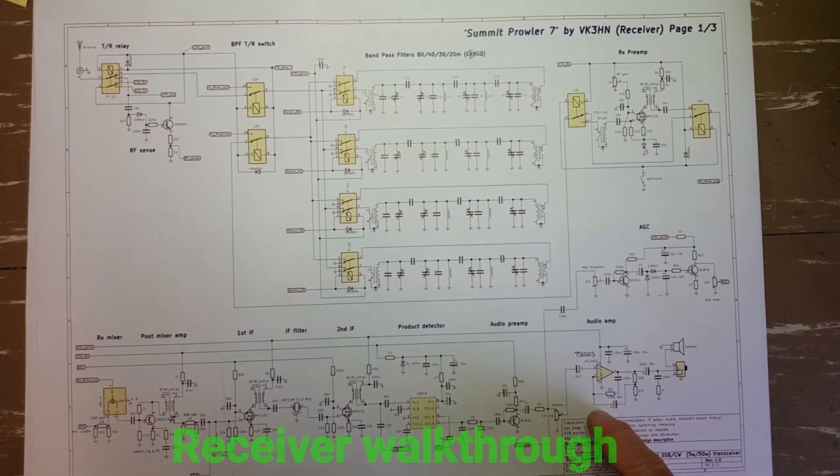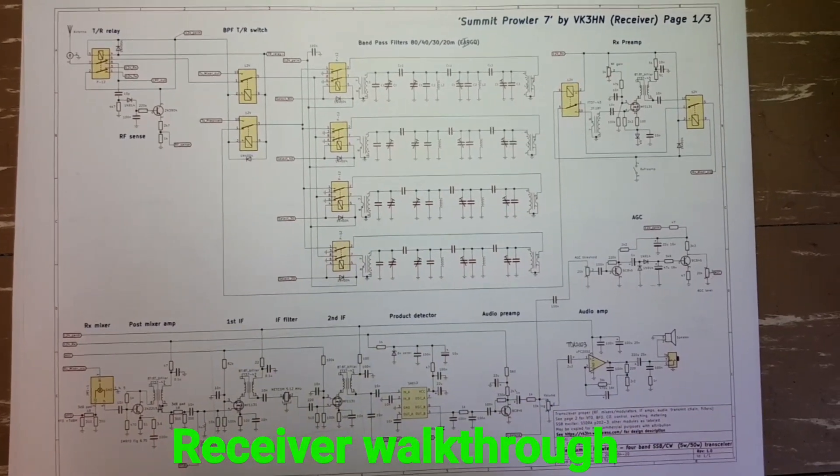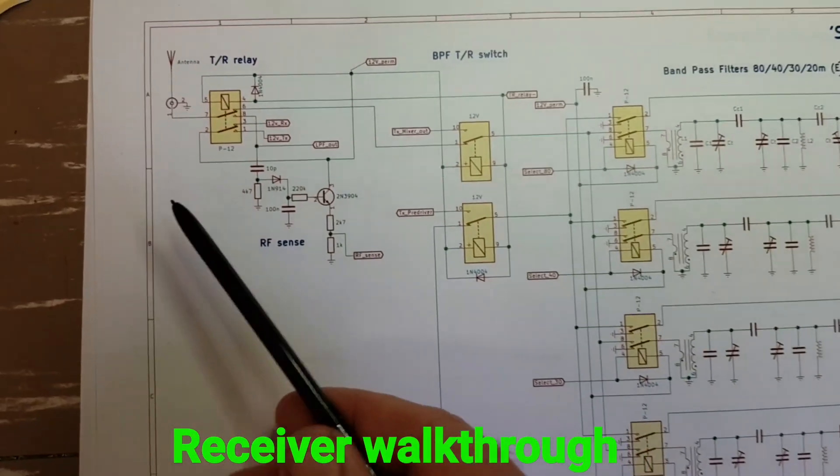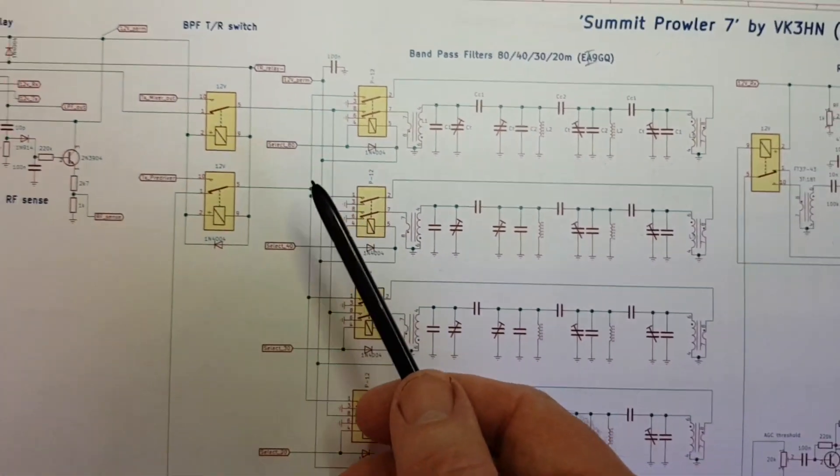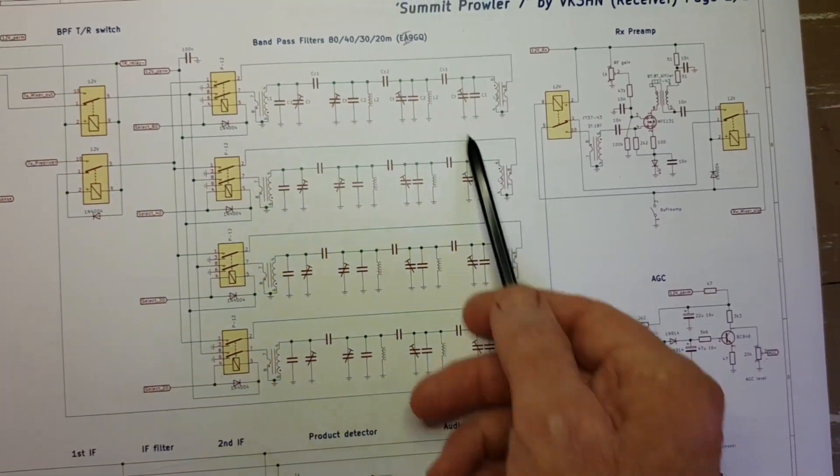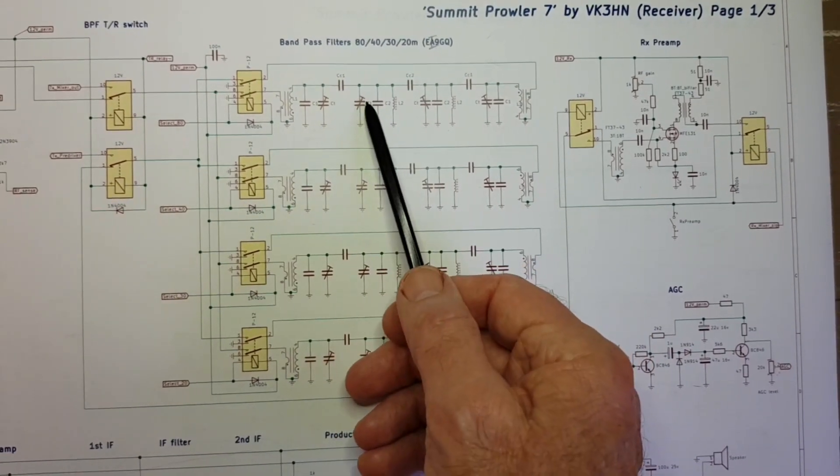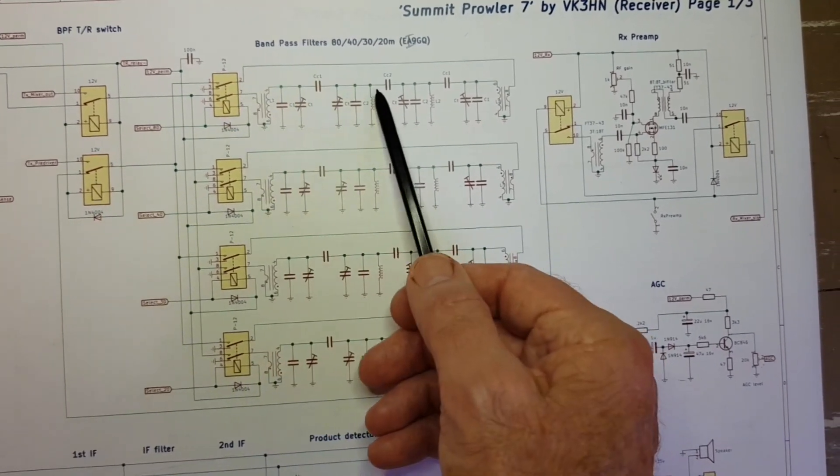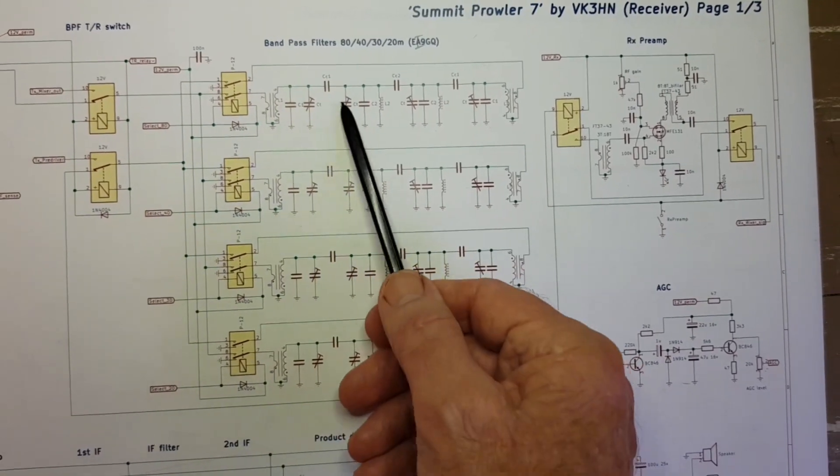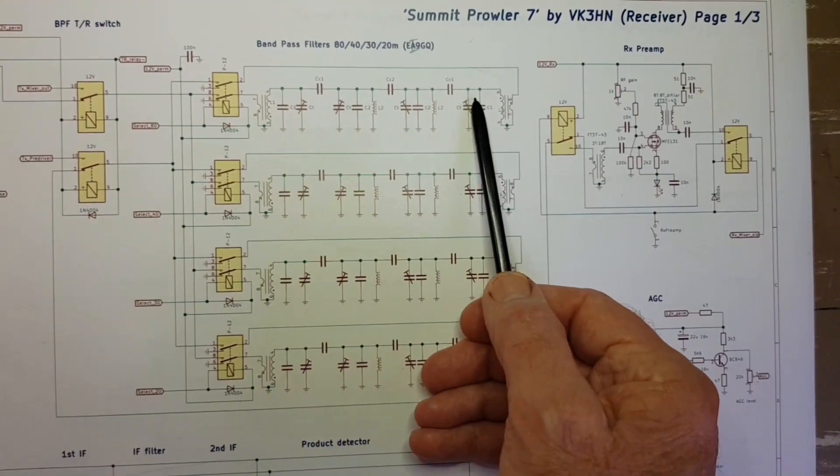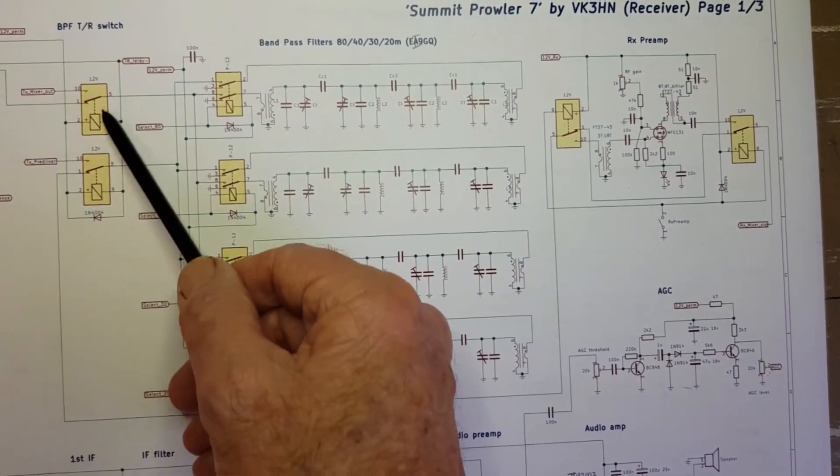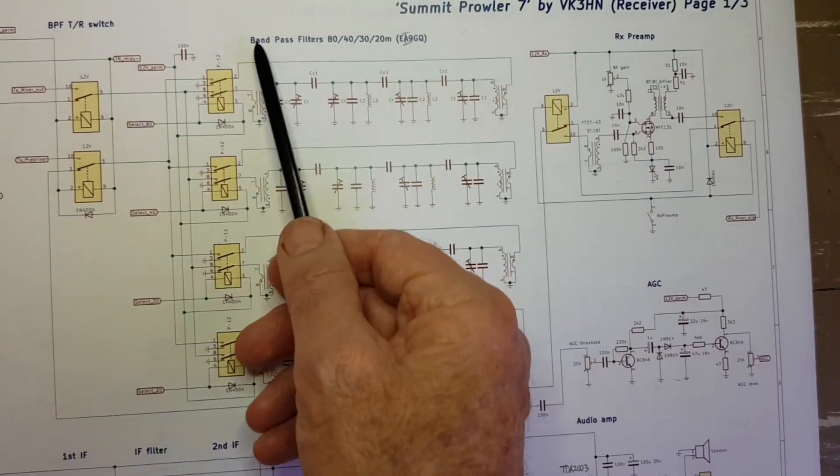The transceiver is a very simple, very conventional superheterodyne. As far as the receiver is concerned, from the TR relay through one of the four selected bandpass filters for the current band, these are relay switched, and then the entire selected bandpass filter is transmit-receive switched. This is all built in a single module.